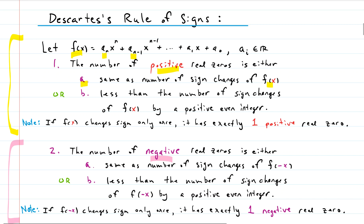You need to have your polynomial in decreasing order of exponents — the biggest exponent has to be first. So for example, this goes five, four, three, two, one, and then the constant term. Once your polynomial is in the correct form — highest exponent to lowest — you can simply look at the sign changes. The number of positive real zeros is either the same as the number of sign changes, or it is less than that number of sign changes by a positive even integer. So you take the number of sign changes and keep subtracting two until you get to zero or a negative number, then you stop.